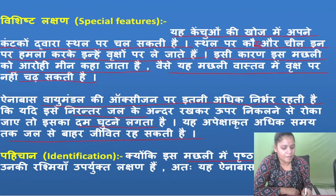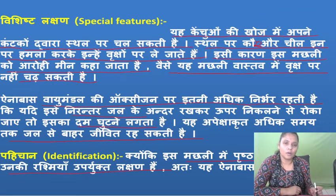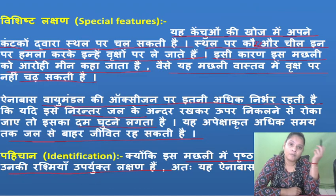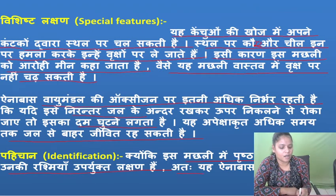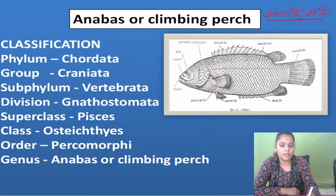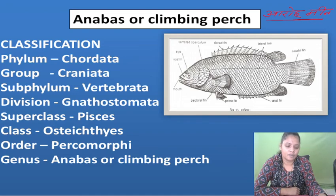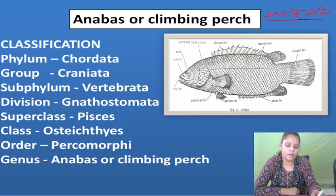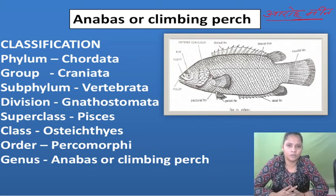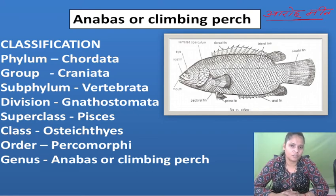In the epibranchial chamber, there are bony and cartilaginous elements. The dorsal and anal fins are present. This concludes our study of Anabas, the climbing perch. Today we studied this fish. I hope you liked this video and it helps you score good marks. Thank you so much.